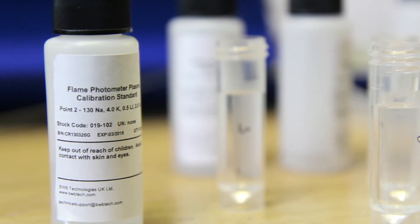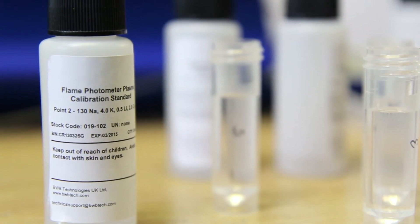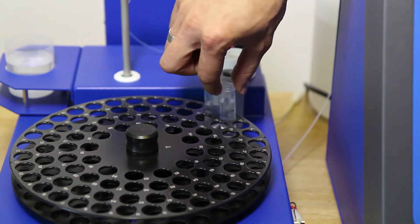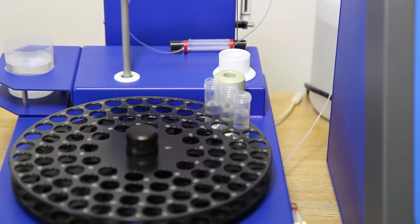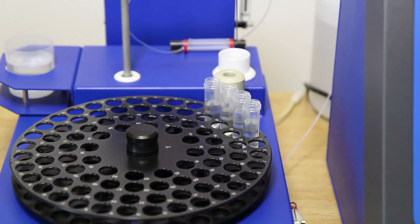A tray of calibration standards is prepared using the solutions provided. Calibration points 1 to 5 are placed at positions 1 to 5 in the carousel, with the extra solution provided for lithium and calcium placed at position 6.